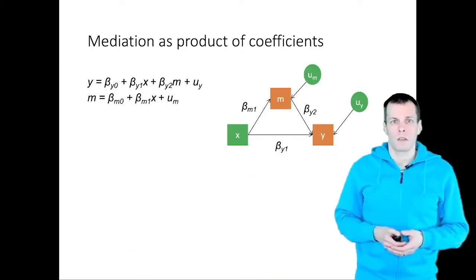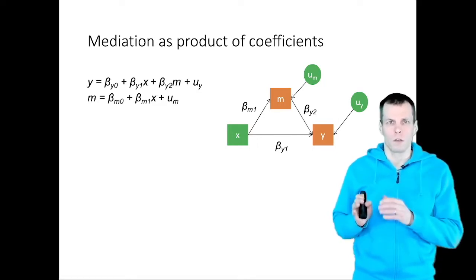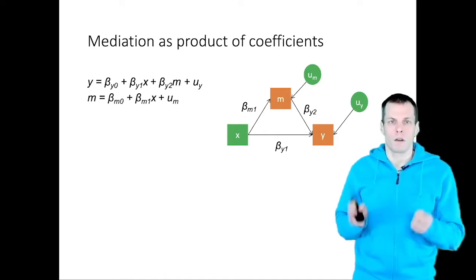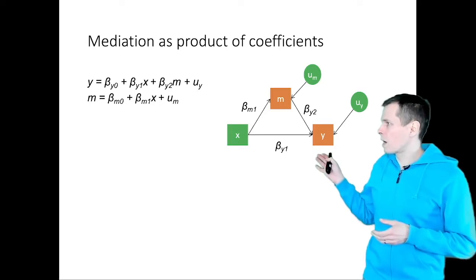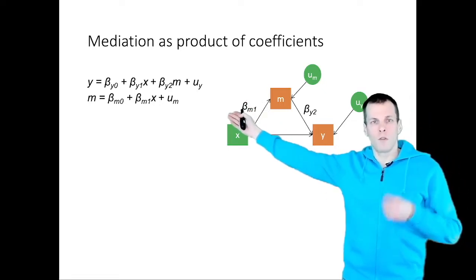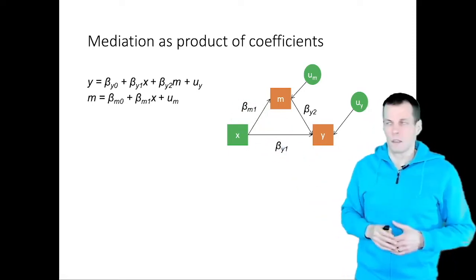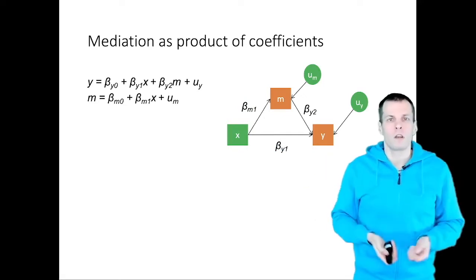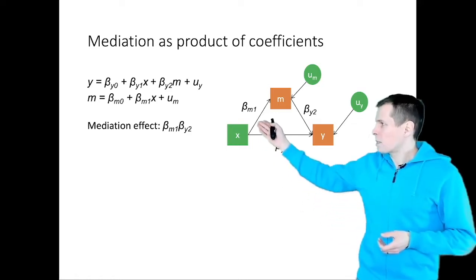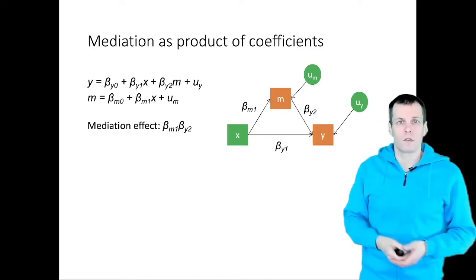Let's go to the actual mediation model. The first approach to mediation that you're usually taught in a research methods course is the product of coefficients, or Baron and Kenny approach. The idea is that we have two models: a model for y as a function of x and m, and a model for m as a function of x. We can have some controls too, but this is just the simplest possible case. The mediation effect is the product of two coefficients — path beta_m1 multiplied by path beta_y2.